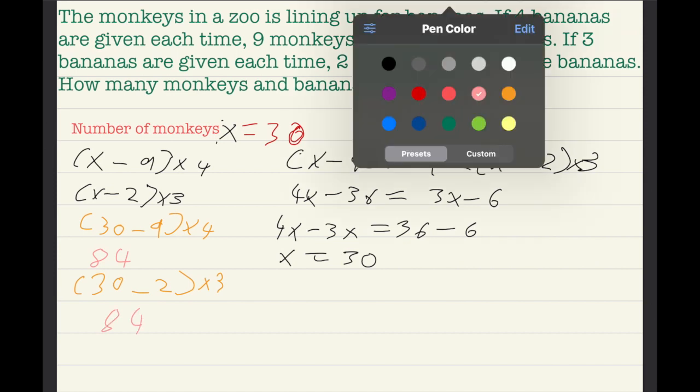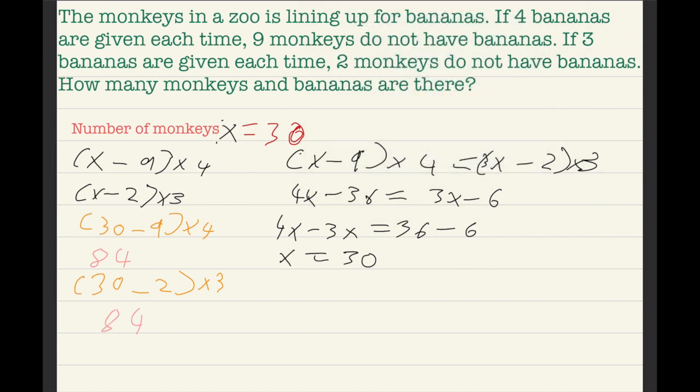So, both of them equal the same thing, and it's supposed to be like that. So, there are 84 bananas in the zoo. 84. So, 84 bananas.